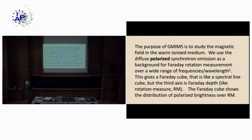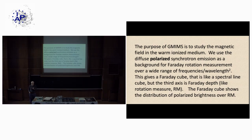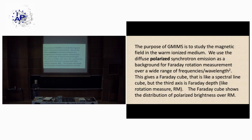The purpose of GMIMS is to study the magnetic field in the warm ionized medium. Most other techniques — starlight polarization, Zeeman splitting — probe much denser phases of the ISM like molecular clouds and dust clouds. In the warm ionized medium, we use the diffuse polarized synchrotron emission as a background for Faraday rotation measurements over a wide range of wavelengths squared. This gives a Faraday cube like a spectral line cube, except the third axis is Faraday depth rather than velocity. Faraday depth is like rotation measure RM; the Faraday cube shows the distribution of polarized brightness over rotation measure — this is essentially Faraday spectroscopy.